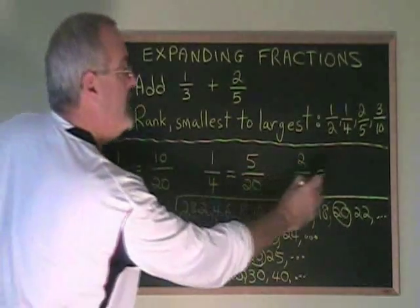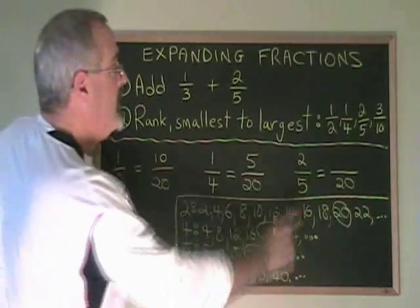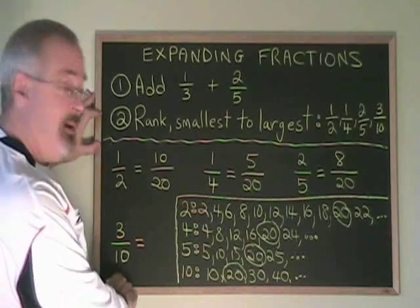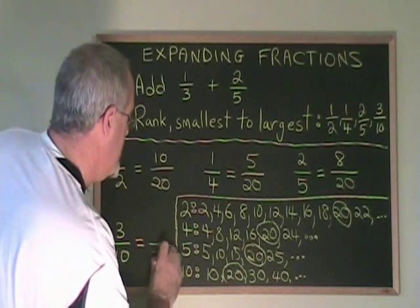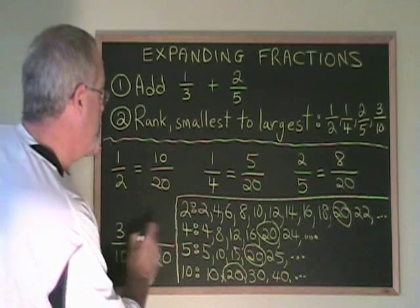To get 5 to turn into 20, I multiply by 4. So I multiply the top by 4. 2 times 4 is 8. And to get 10 to turn into 20, I multiply by 2. So I multiply the top by 2. 3 times 2 is 6.